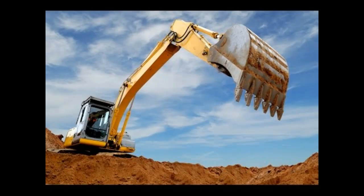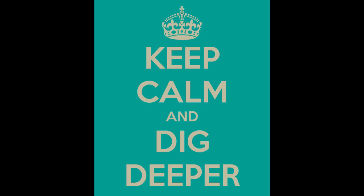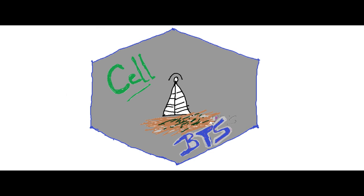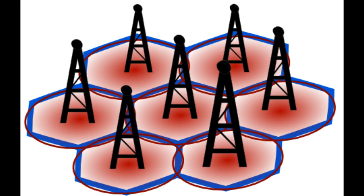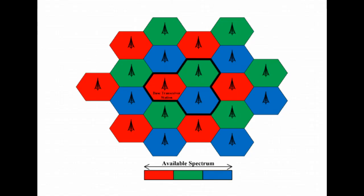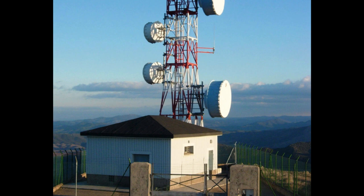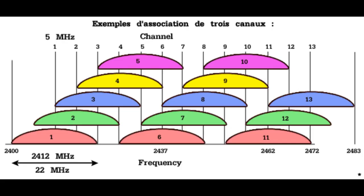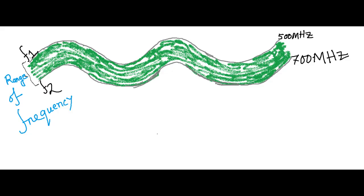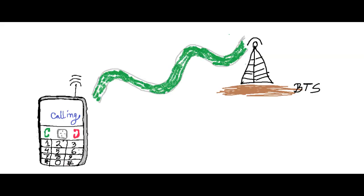A cell is a geographical area. Your area is divided into several cells, and each cell is served by at least one BTS, or Base Transceiver Station — what you see as a mobile tower. Channels are the logical medium of radio communication, meaning a channel is the band of frequency by which you are connected to your mobile tower.